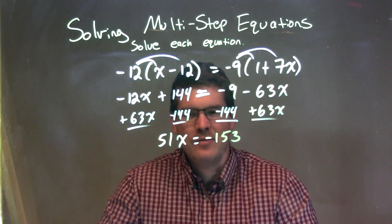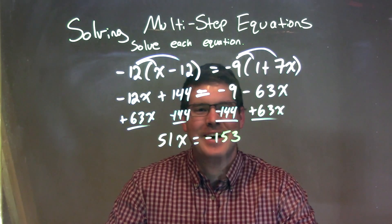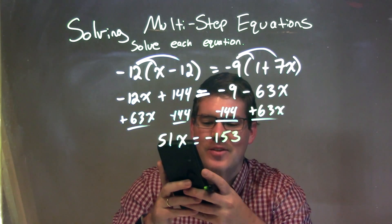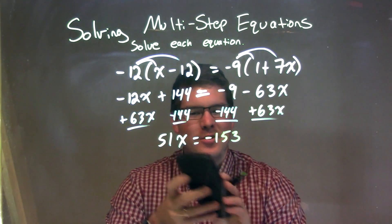What are the odds that 51 goes into 153 three times, right? Let's go check it out. 153 divided by 51 is just 3. Fantastic.